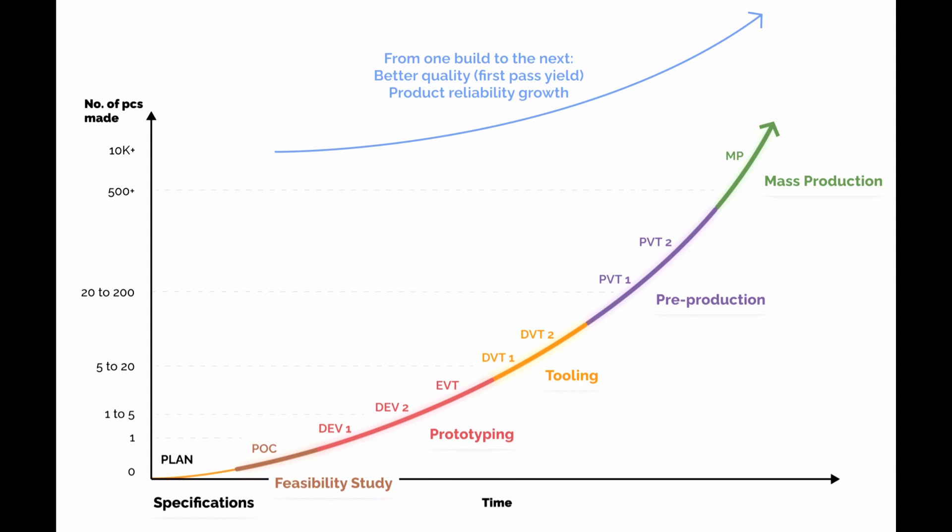As you can see in this graph, there are one, two, three, four, five, and then finally six phases, right?